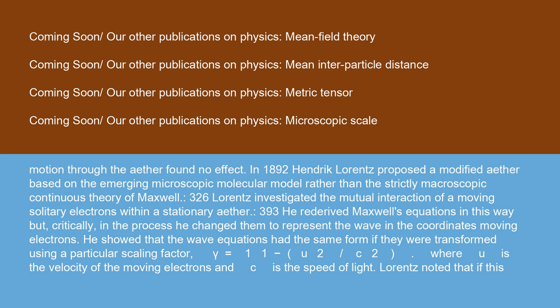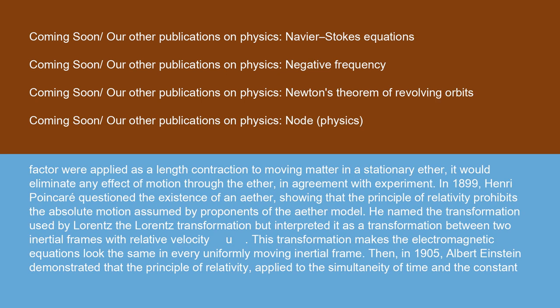In 1892, Hendrik Lorentz proposed a modified ether based on the emerging microscopic molecular model rather than the strictly macroscopic continuous theory of Maxwell. Lorentz investigated the mutual interaction of moving solitary electrons within a stationary ether. He re-derived Maxwell's equations in this way, but critically, in the process he changed them to represent the waves in the coordinates moving electrons. He showed that the wave equations had the same form if they were transformed using a particular scaling factor, gamma equals 1 / √(1 − u²/c²), where u is the velocity of the moving electrons and c is the speed of light. Lorentz noted that if this factor were applied as a length contraction to moving matter in a stationary ether, it would eliminate any effect of motion through the ether, in agreement with experiment.